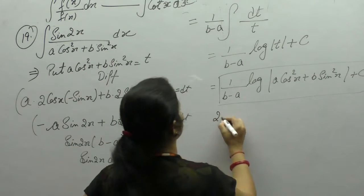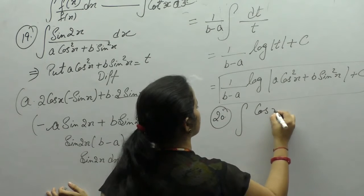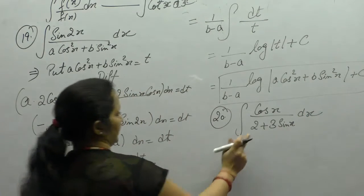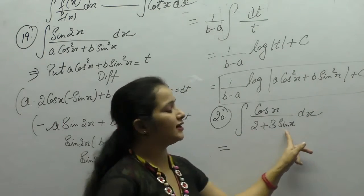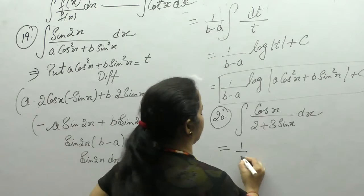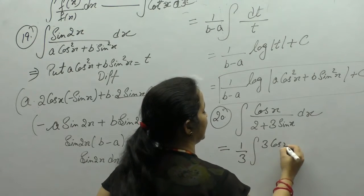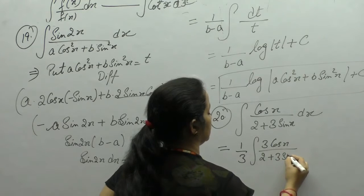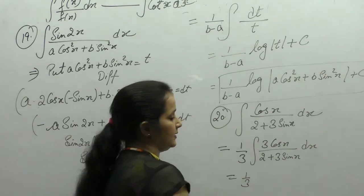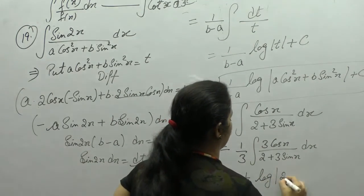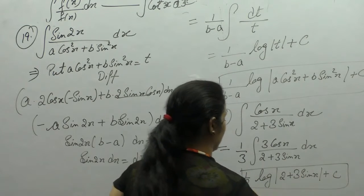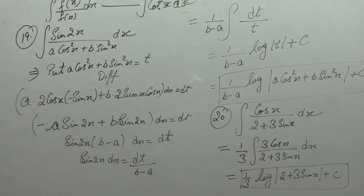Next is integration of cosx/(2 + 3sinx). Here we directly know the derivative: derivative of 2 is 0 and derivative of sinx is cosx, but we have 3sinx so derivative of 3sinx is 3cosx. So we multiply and divide by 3. Now we have f'(x) in the numerator and f(x) in the denominator, giving log(f(x)). The answer is (1/3)·log(2 + 3sinx) + c.